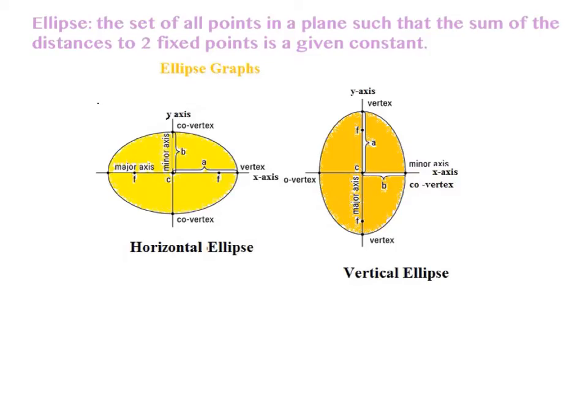The technical definition of an ellipse is the set of all points in a plane such that the sum of the distances to two fixed points is a given constant. I demonstrated this in class with some string.